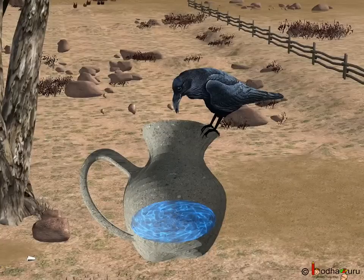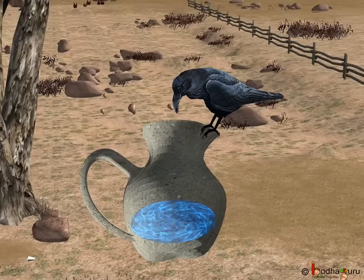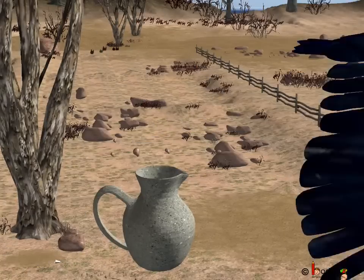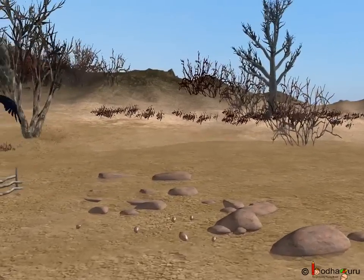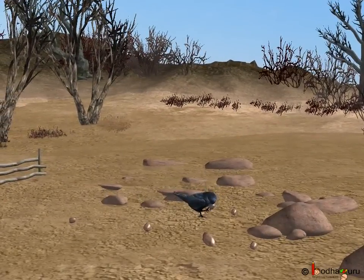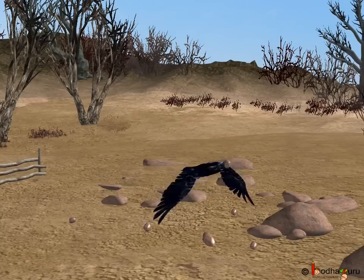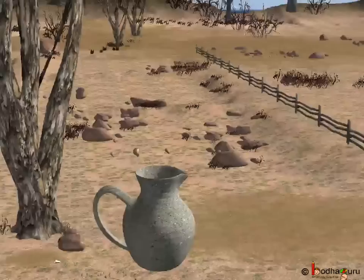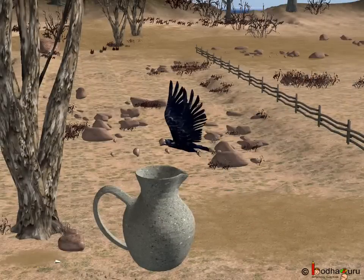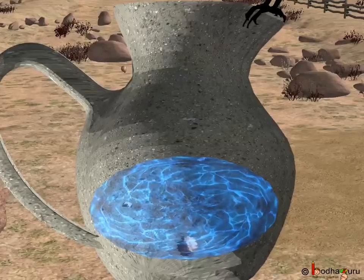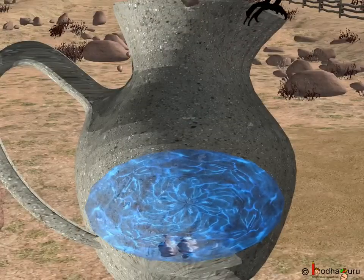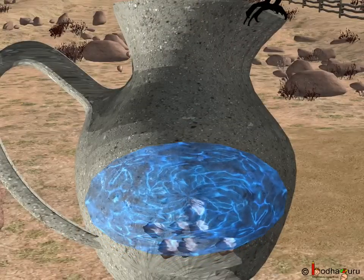He tried to drink but the water was out of its reach. Now what to do? The clever crow came up with an idea. It started filling the pot with stones. One by one he put many stones. What happened? The water level started to rise up.